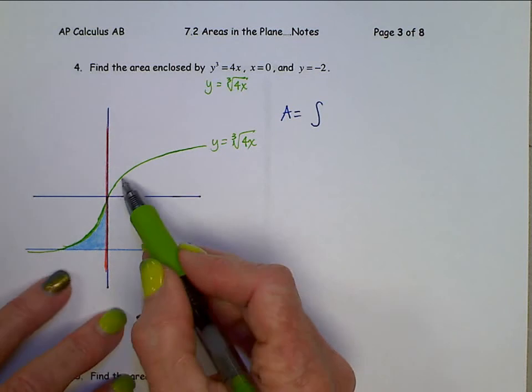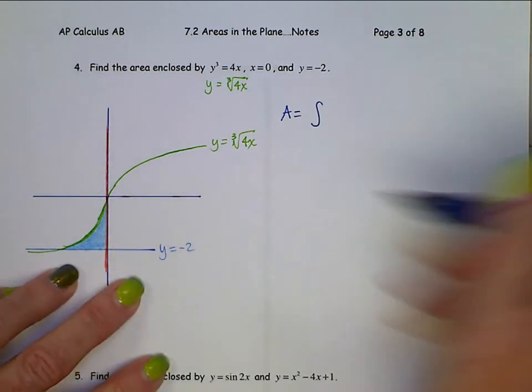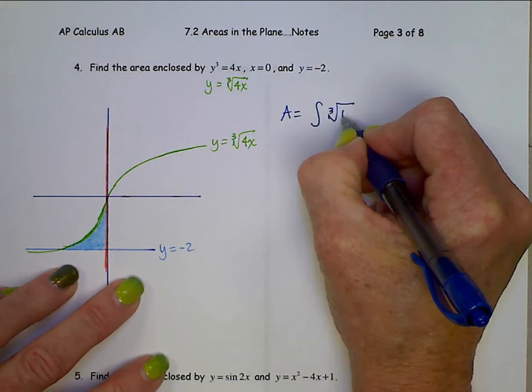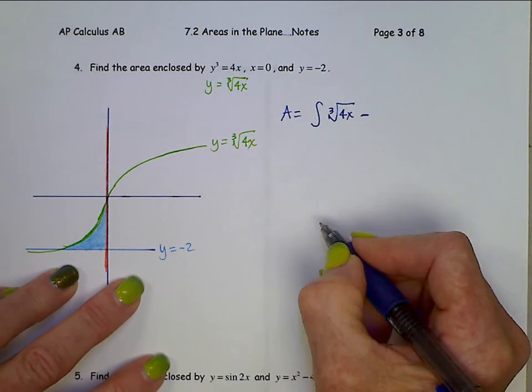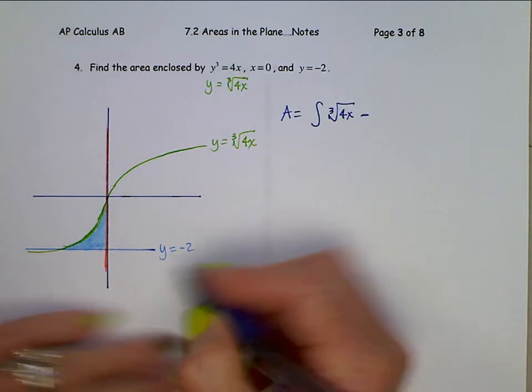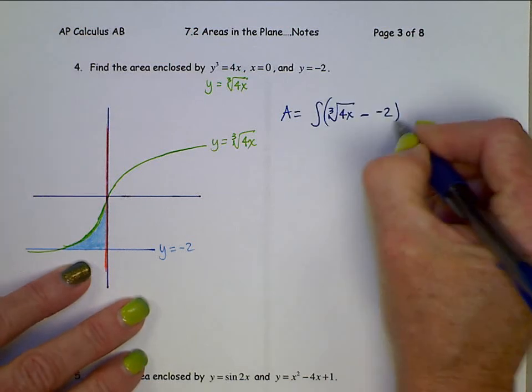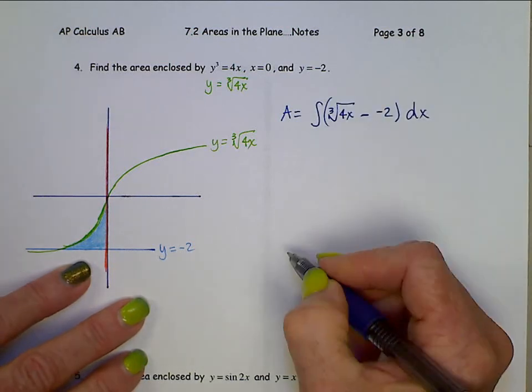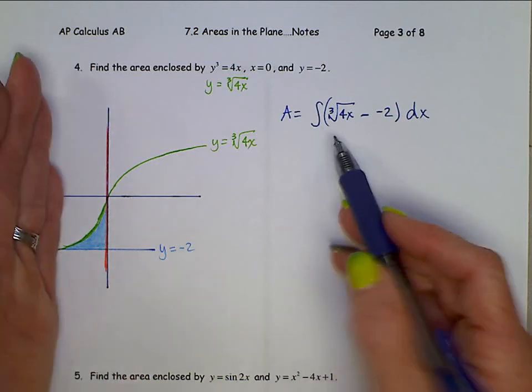Well, that's this cube root one. So we're going to have to do this cube root of 4x, there's your top function, minus the bottom function. That's the y equals negative 2. dx, and then bounds here, start to stop.